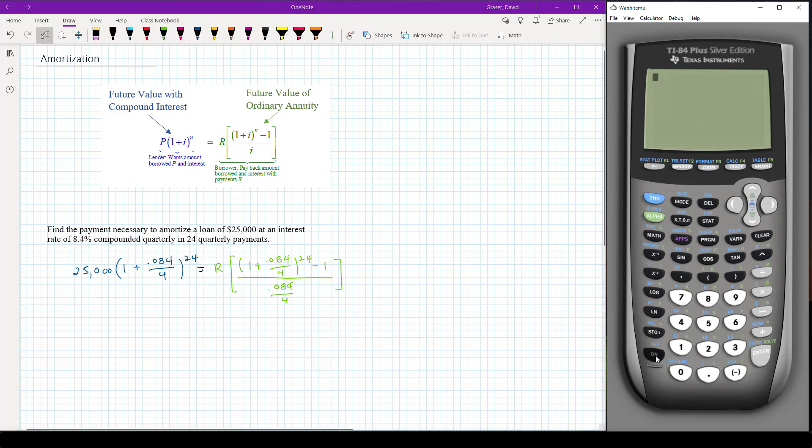Let me turn on my calculator so we're going to do the blue part. So 25,000 times (1 + 0.084 divided by 4) raised to the 24th power.